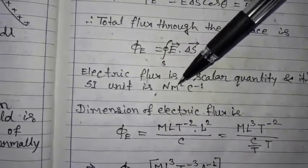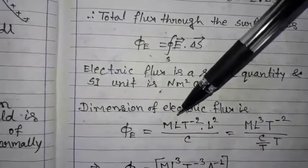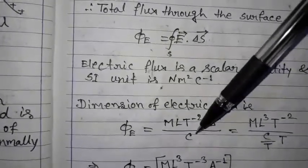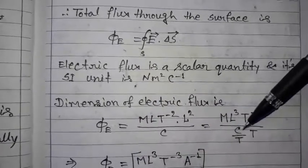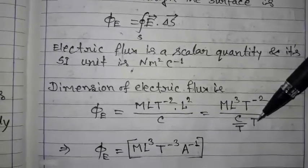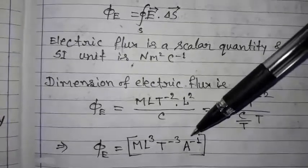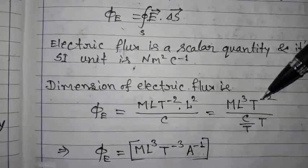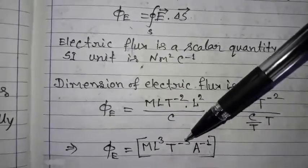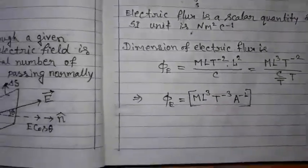The dimension of electric flux can be determined from its unit: newton means MLT⁻², meter squared means L², and coulomb to the power minus one. Since coulomb is not a base unit, we convert it using the relation that coulomb divided by time gives ampere. So the dimension of electric flux is MLT⁻³A⁻¹, or equivalently ML³T⁻³A⁻¹.